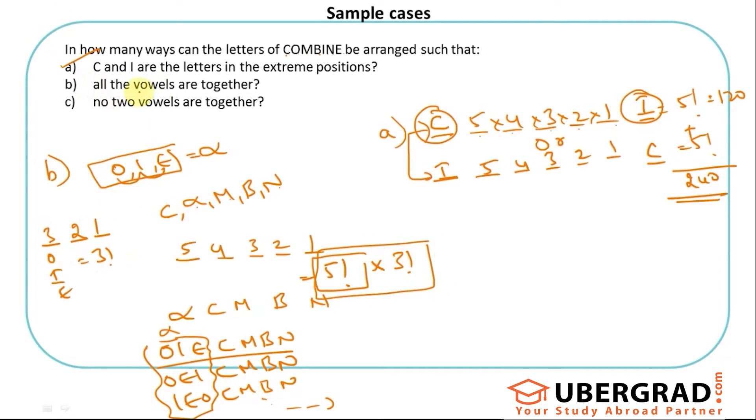The step is when some things need to be together, take all of them as one new alphabet. Now replace that and arrange this in five factorial ways. Don't stop there. Within that alphabet that I have assumed, see how many letters are clubbed together and arrange them in factorial ways and write the answer. That is the thing that you need to do.